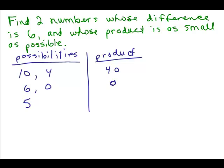How about 5 and negative 1? Now that's tricky, but remember the difference means 5 minus negative 1. And you know what? That really does equal 6. So that's a possibility. And what happens when you do 5 times negative 1? Then we get negative 5.